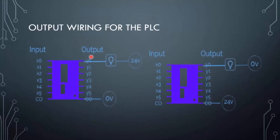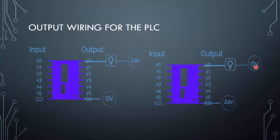Similarly, there are two types of output wiring. When 24 volts is connected with one of the outputs, the PLC output is said to be sinking. When 24 volts is connected with the common, the PLC is said to be sourcing. Keep in mind that whatever is connected at the common is internally connected with the output — for example, the common is internally connected with Y0 — and this is similarly true for the input side.